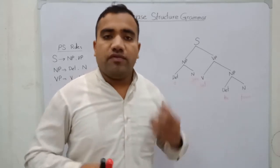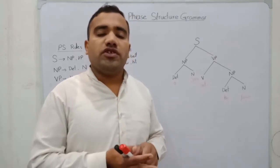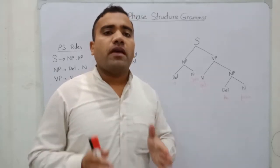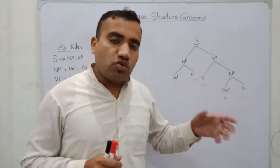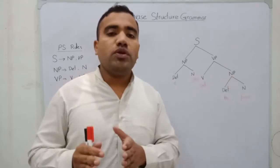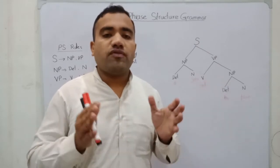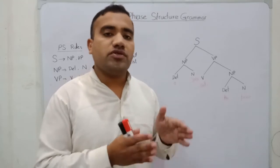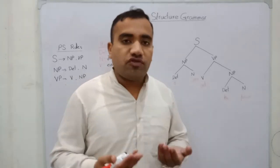In the initial stage, Chomsky stated that in phrase structure theory there are two things: one is the phrase structure rules, and the second is the items in human cognition. First of all, we should know what the phrase structure rules are and how we can draw sentences by applying them.